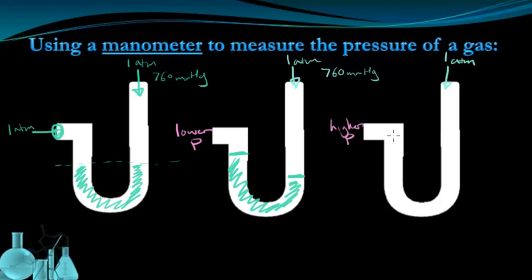In the higher pressure system, we're going to see that the level of mercury on the end with the higher pressure is going to be lower than the level of mercury on the atmospheric pressure side. Now this should make sense.